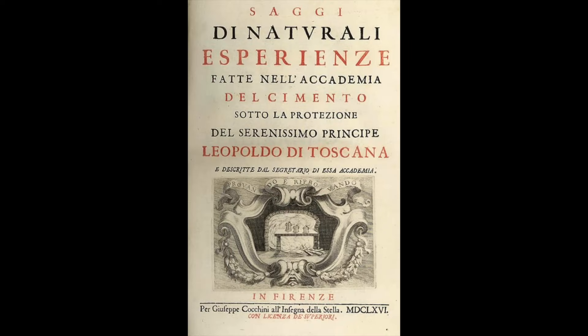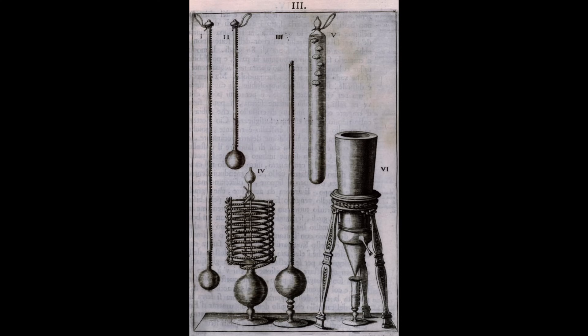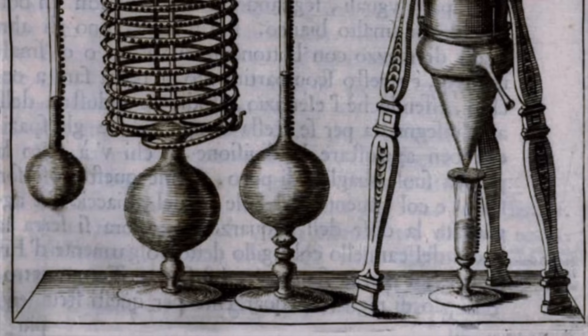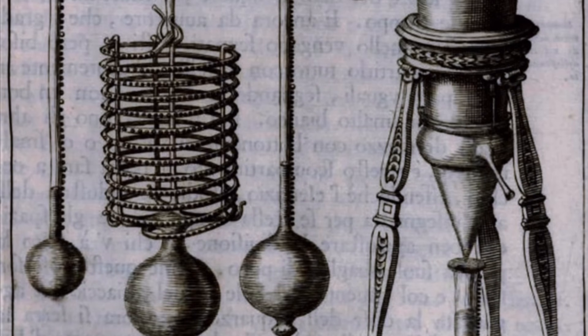In the 1666 edition of the Academia's journal they list five different models of thermometers that they developed. The first model was just a copy of the Galilean thermoscope. The second model was a Galilean thermoscope with a stem twice as long. The third model was a Galilean thermoscope with a stem four times as long. The fourth model had a stem wound into a helix so it could be even longer while taking up less space. And finally the fifth model was this — what is now known as a Galilean thermometer.